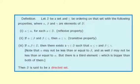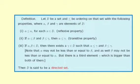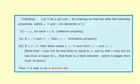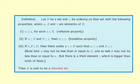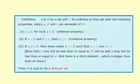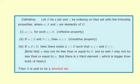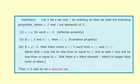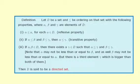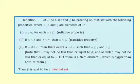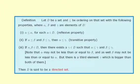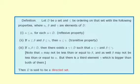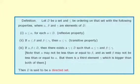Property 3: if α and β belong to D, then there exists a γ in D such that α ≤ γ and β ≤ γ. Note that α may not be less than or equal to β, and β may not be less than or equal to α. However, there is a third element γ which is bigger than both of them. Then D is said to be a directed set.